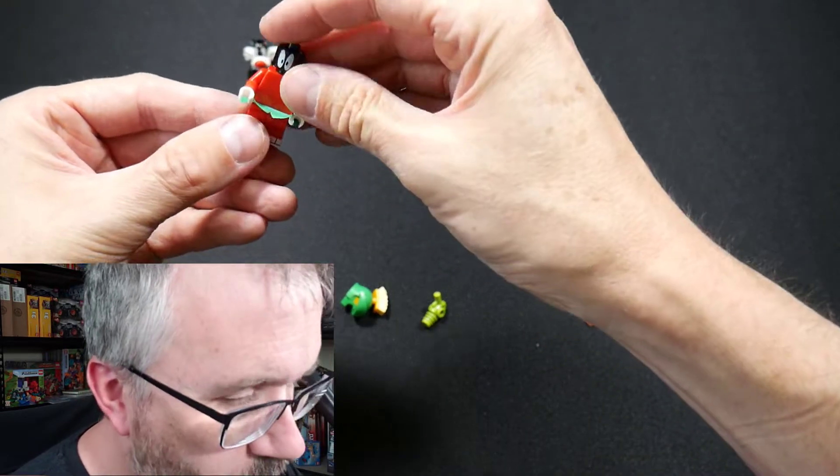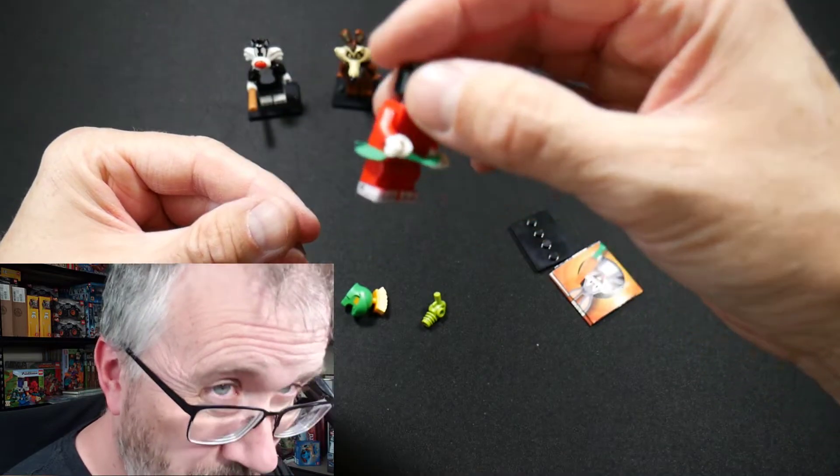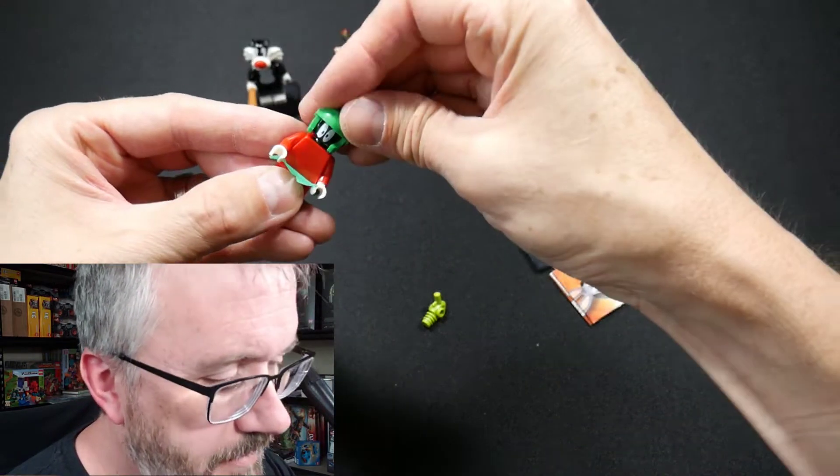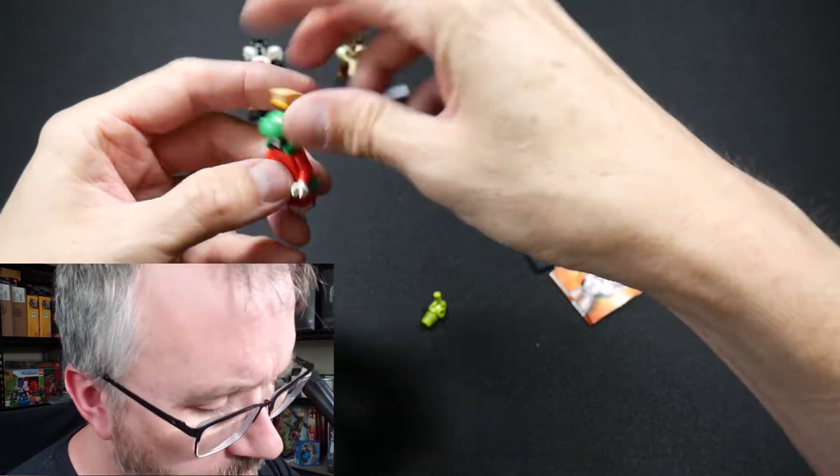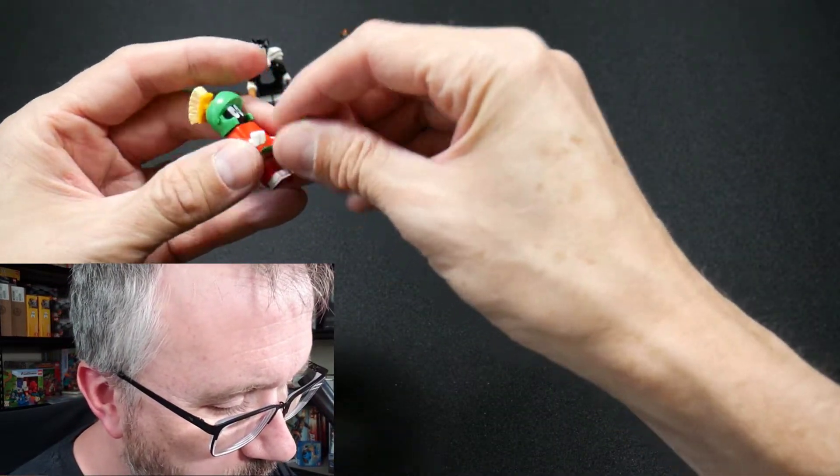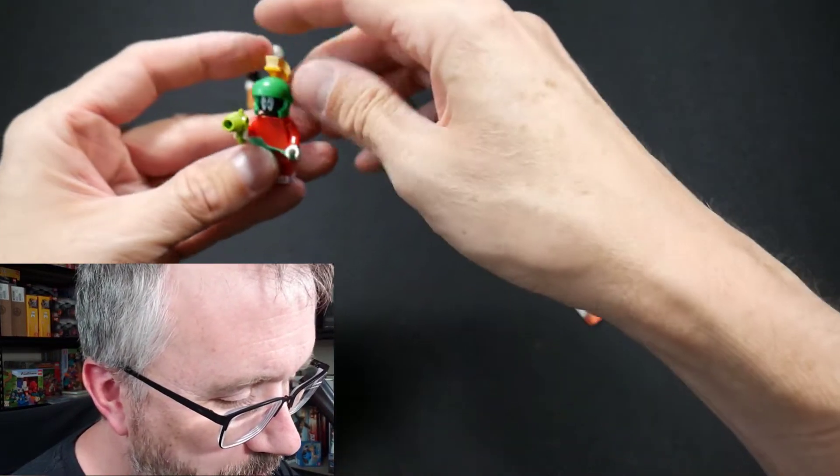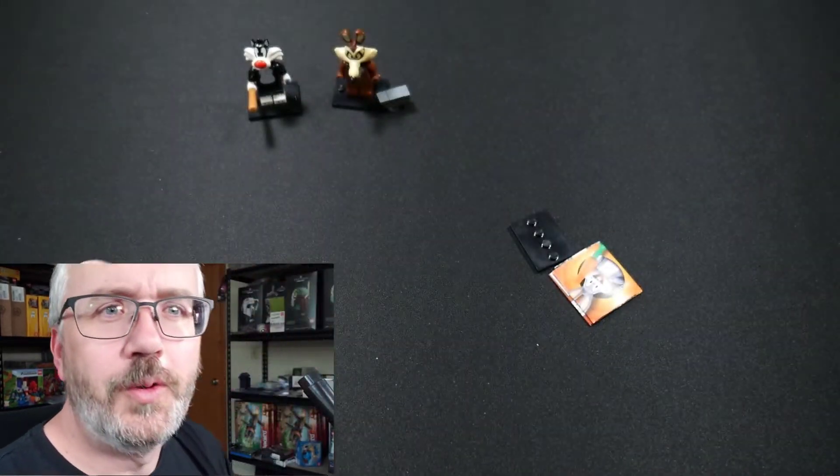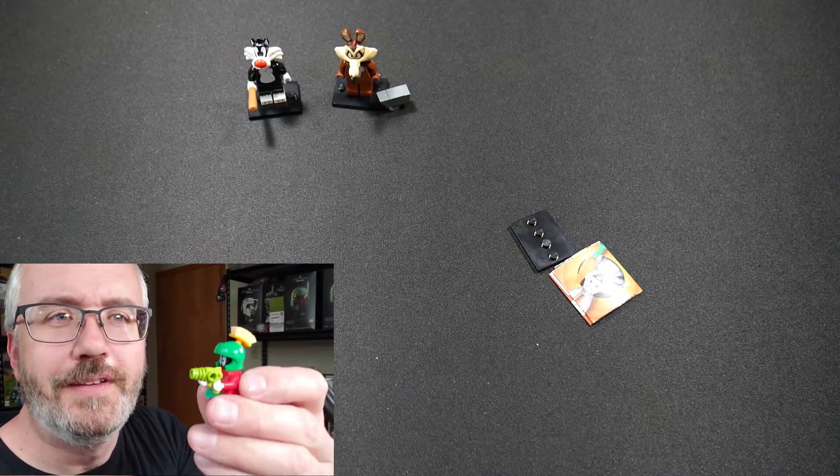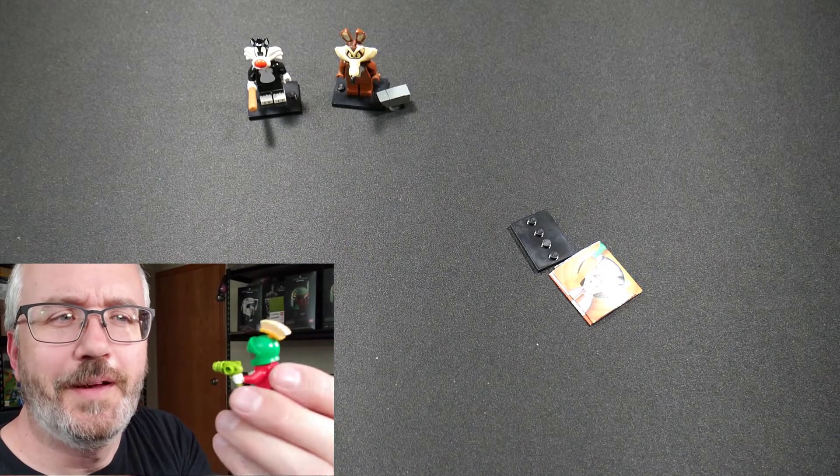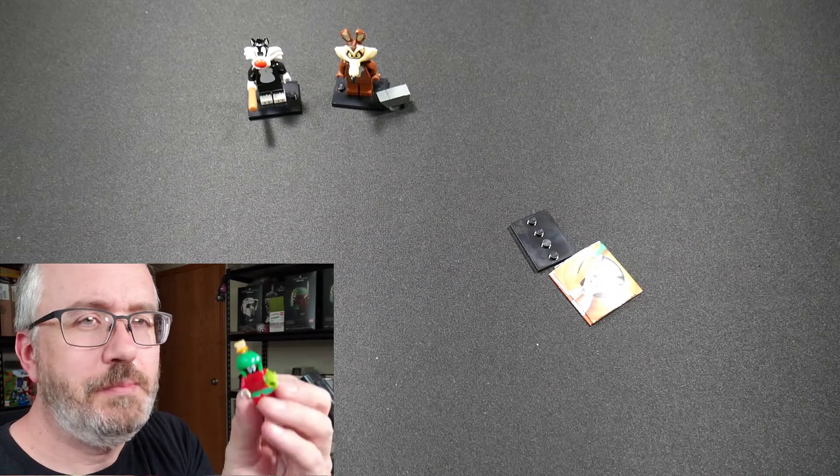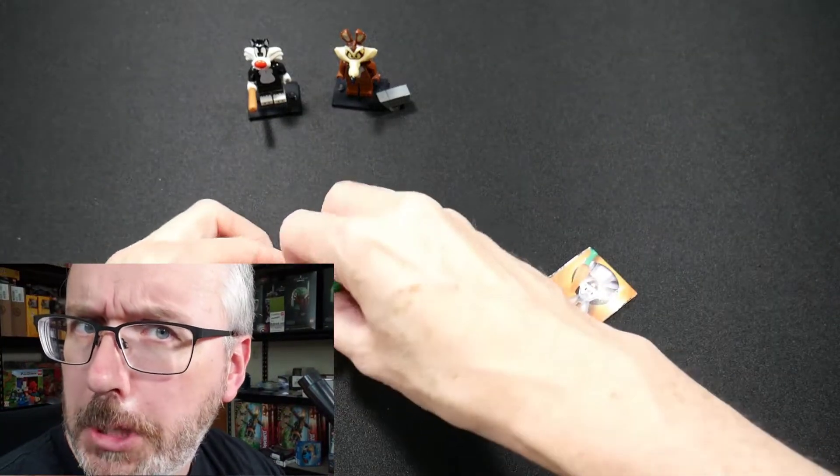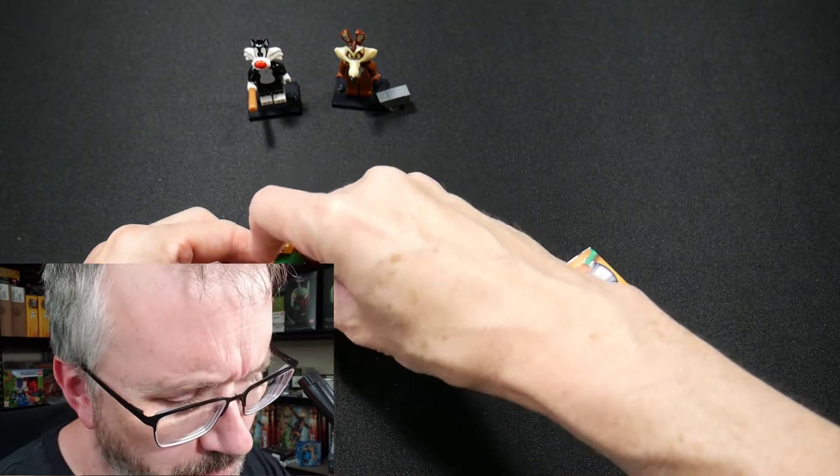He does have the short legs, which is interesting, but his torso is so big, he doesn't really look like Marvin the Martian size. But love that little ray gun. That's cool. That's pretty awesome. There you go. Yeah. Pew pew. Space modulator. Whatever he used to say. My uranium P38 space modulator.